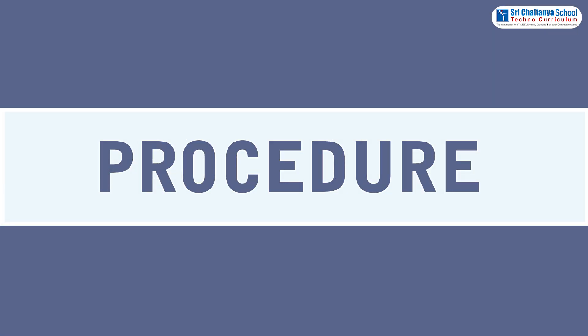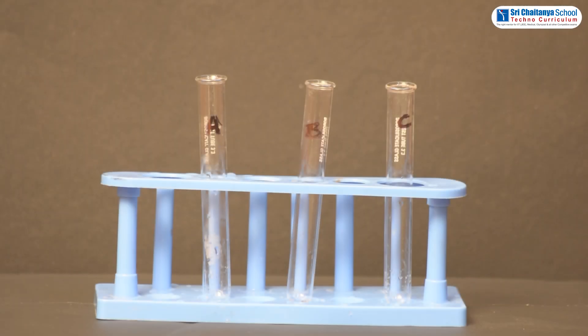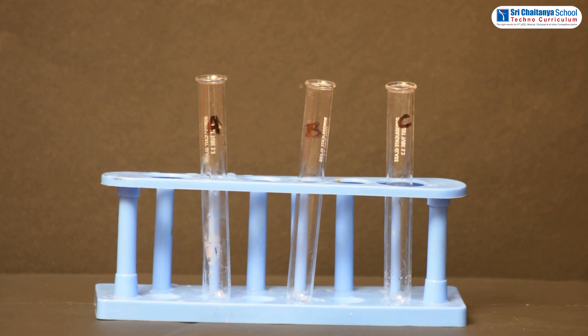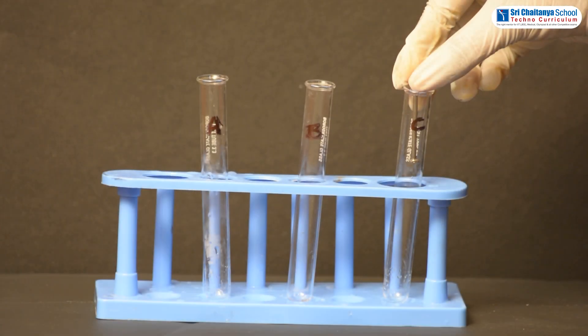Now it is time to see procedure. Take three test tubes and mark these tubes as A, B and C. Place iron nails in each of them.